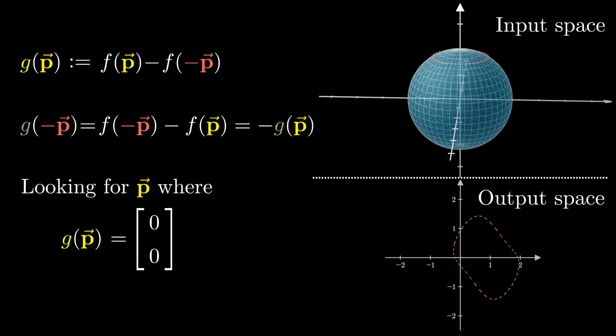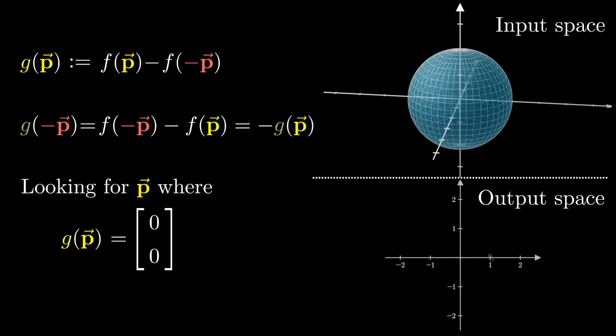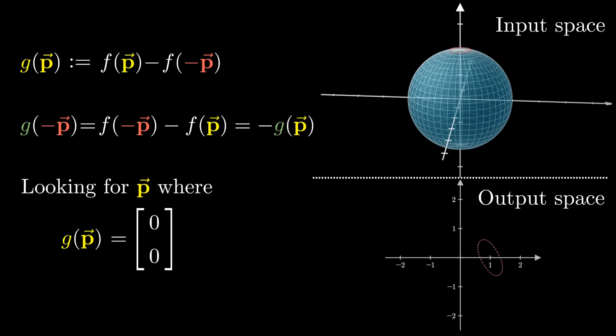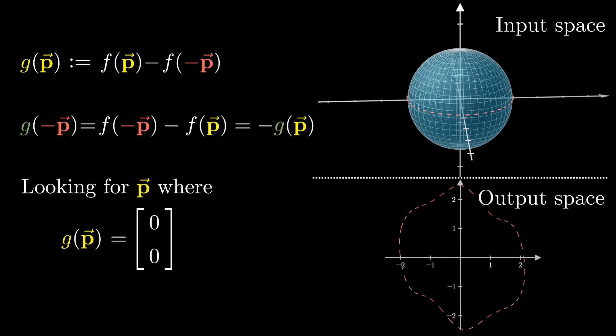As you do this, the resulting path in the output space is also continuously deforming to a point, since the function g is continuous. Now, because it wound around the origin, at some point during this process it must cross the origin.